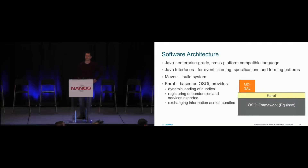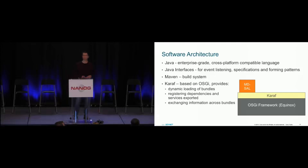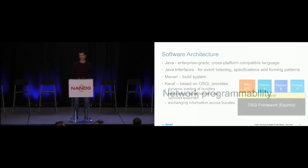Now, very briefly, what is the software architecture? The code is almost all Java — a good enterprise-grade, cross-platform compatible programming language. Maven is used as the build tool to assemble all these components together. Karaf is very important here: based on OSGi, it provides a framework to dynamically enable and add components to OpenDaylight. This is what allows you to enable just those features you want at runtime, add new features or support for a new network protocol or a new Yang model. When you first install OpenDaylight, it starts up with just that abstraction layer, and then you selectively add the features you want on top of it.